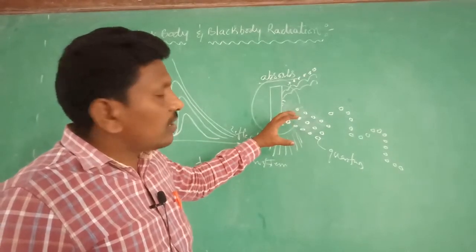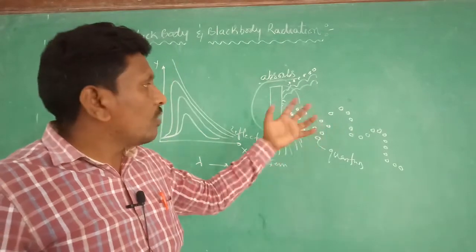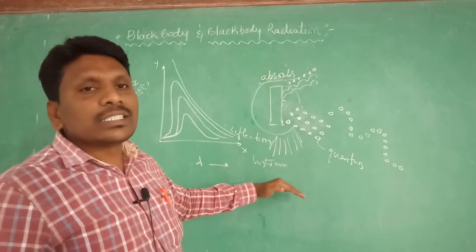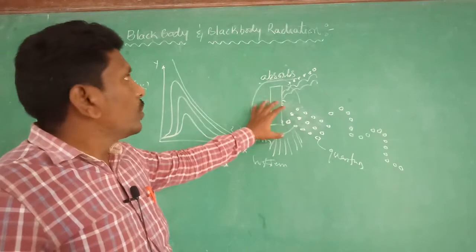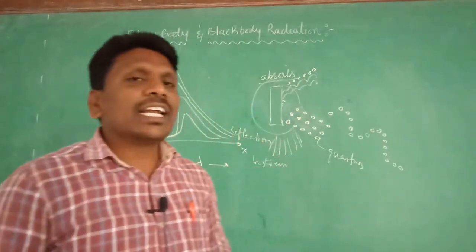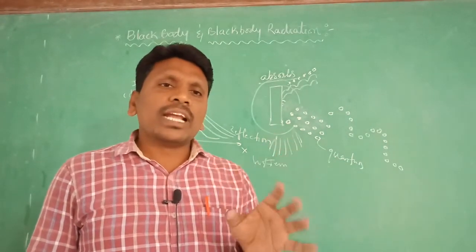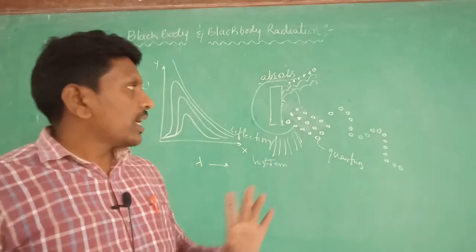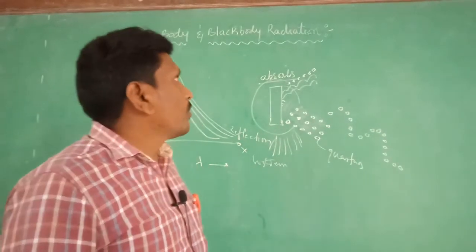Each packet has some energy — they are called photons or quanta, which are emitted by the black body when the black body undergoes high temperature or heating. So this is about the black body and black body radiation. Practically, there is no perfect black body in the universe. The Sun is a good example of a good emitter.